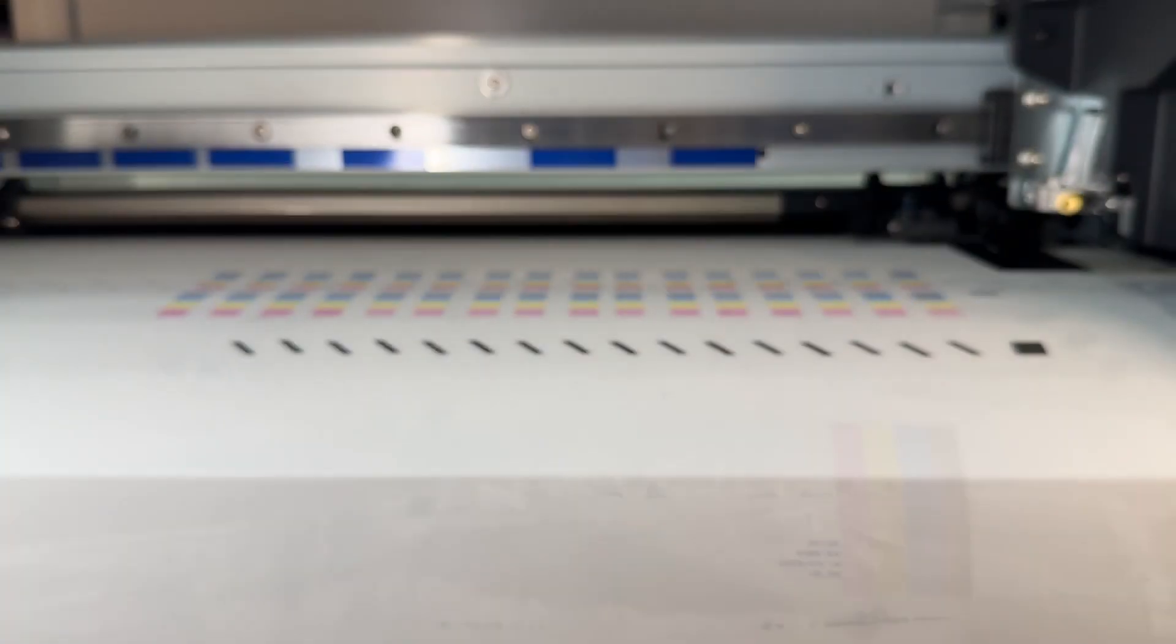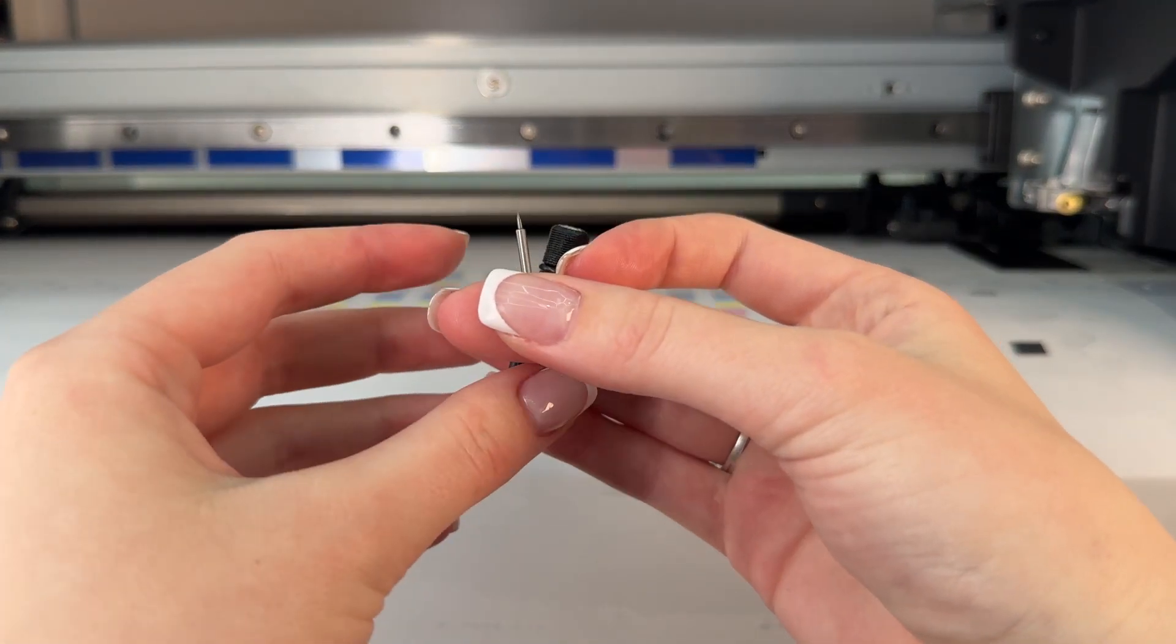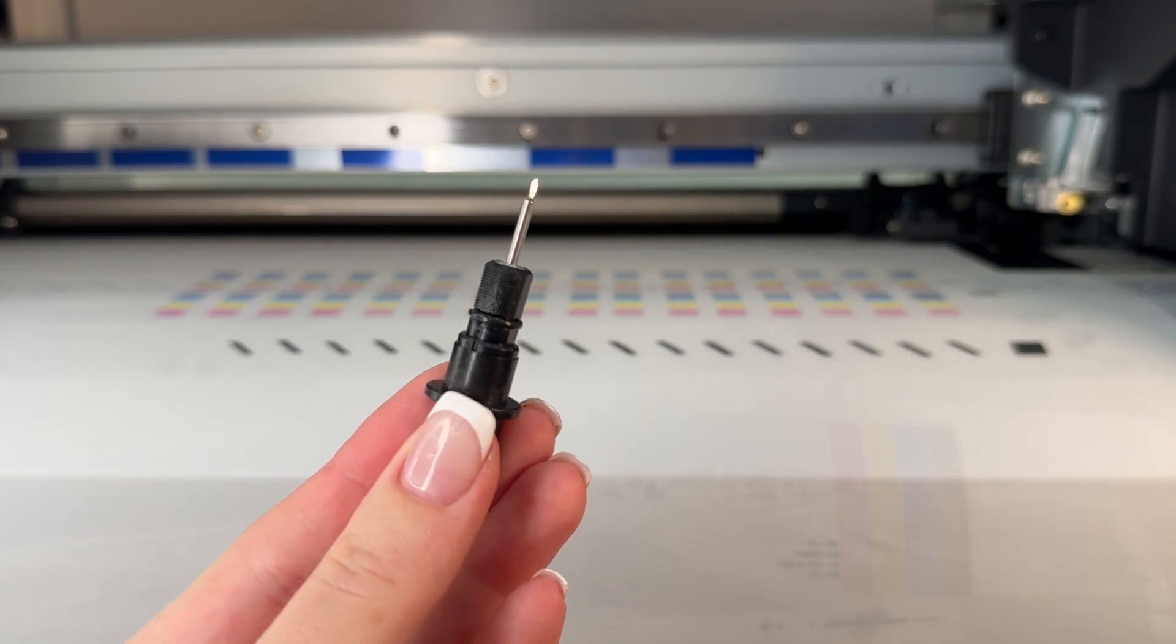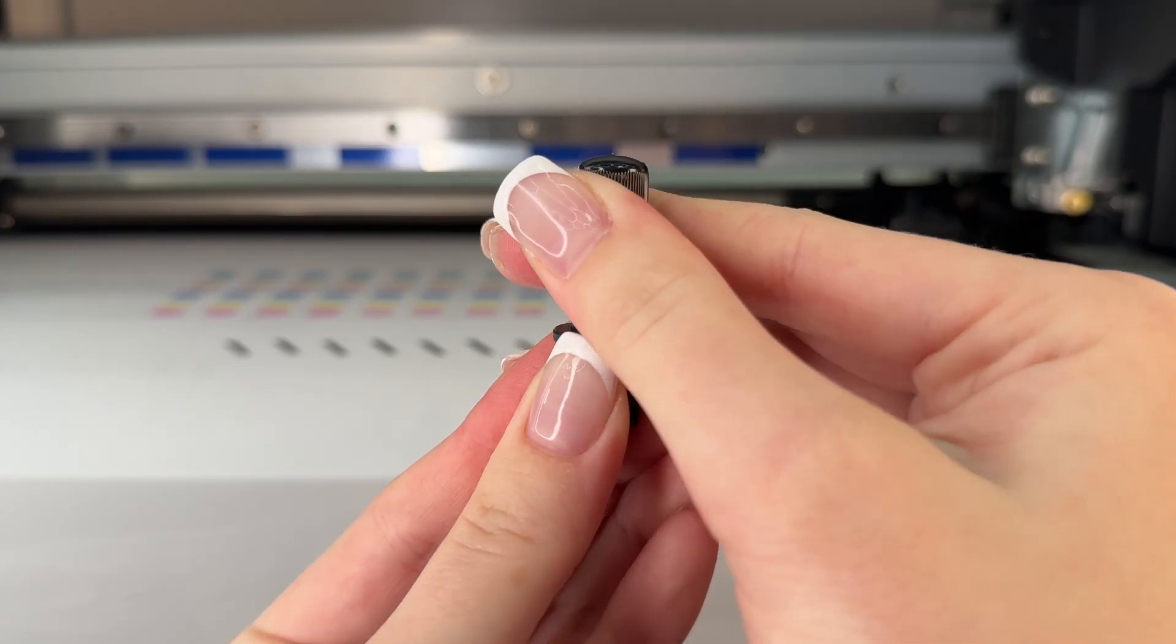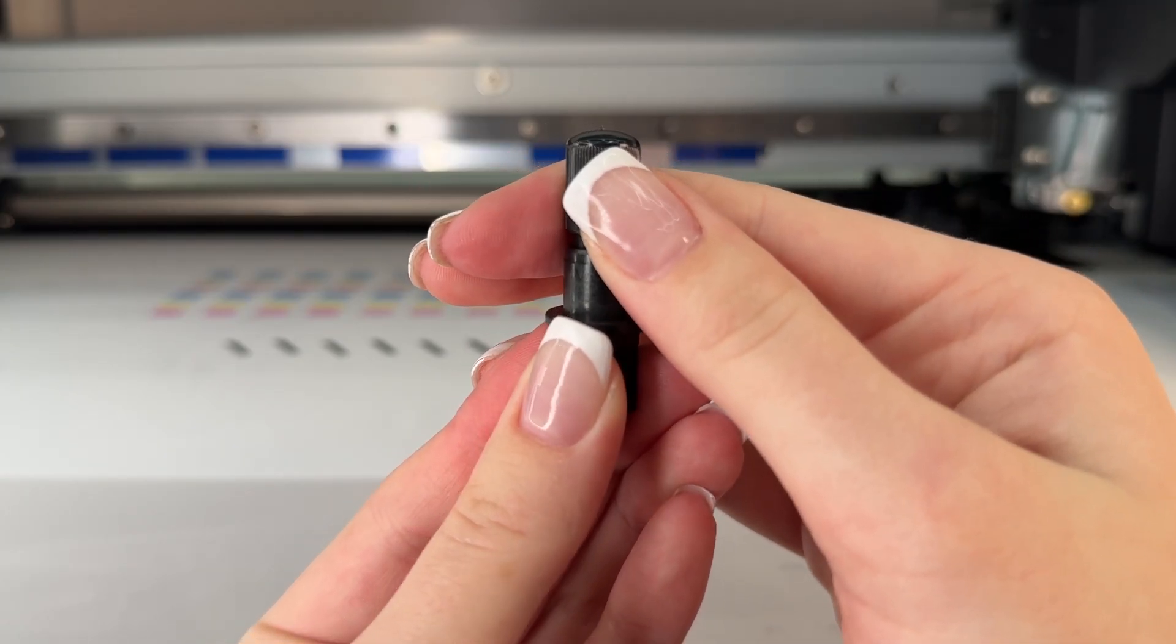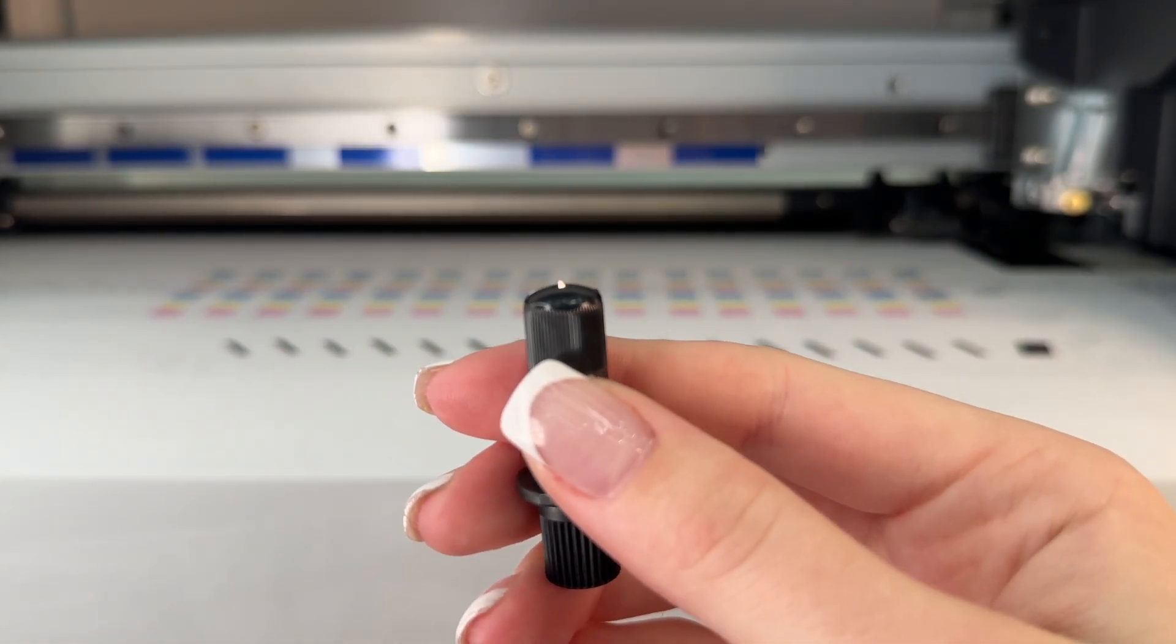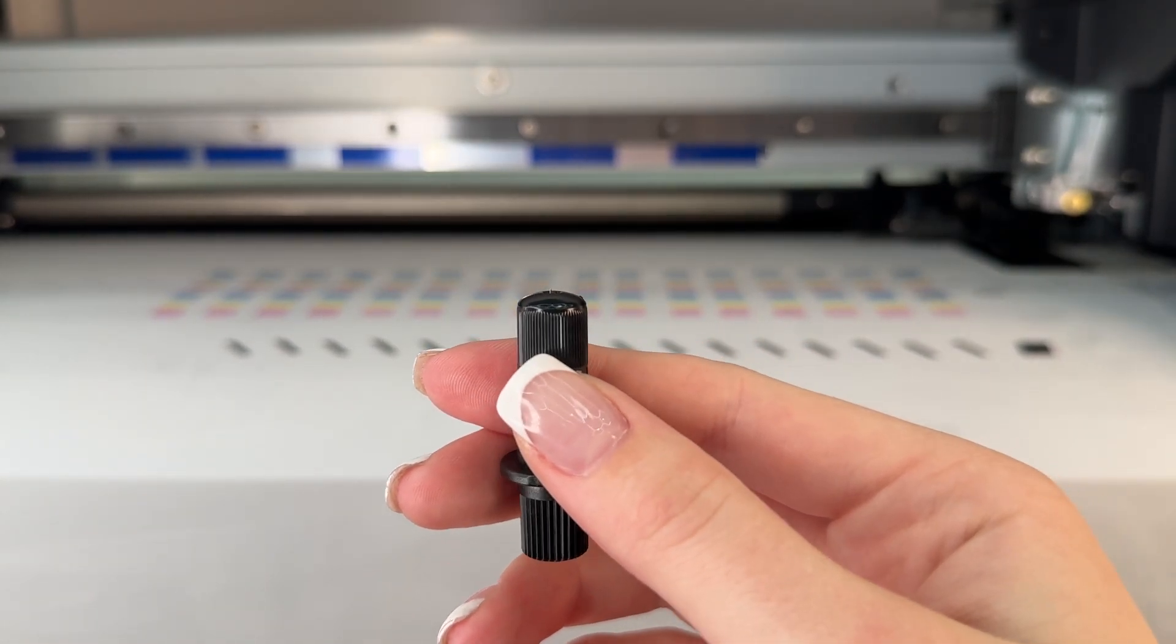Now that everything's adjusted, we're going to put the cutting tool in and adjust it properly. The key tip here for putting the tip of the blade into the tool holder is to make sure that the blade is peeking out just enough to cut through the material that you are printing on.